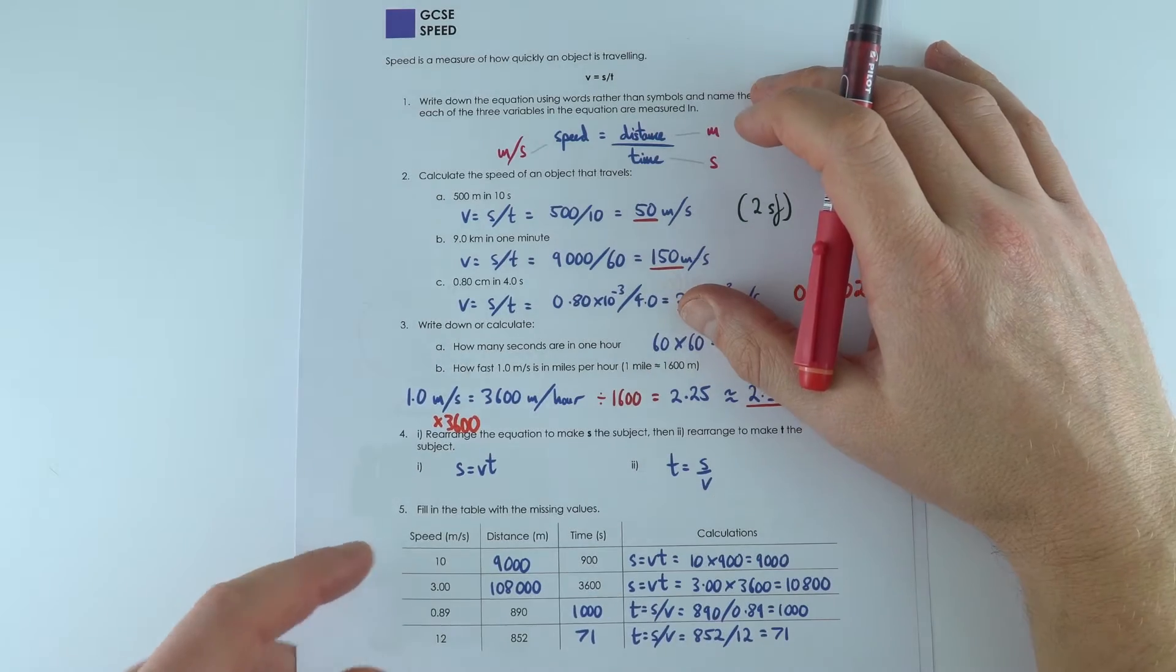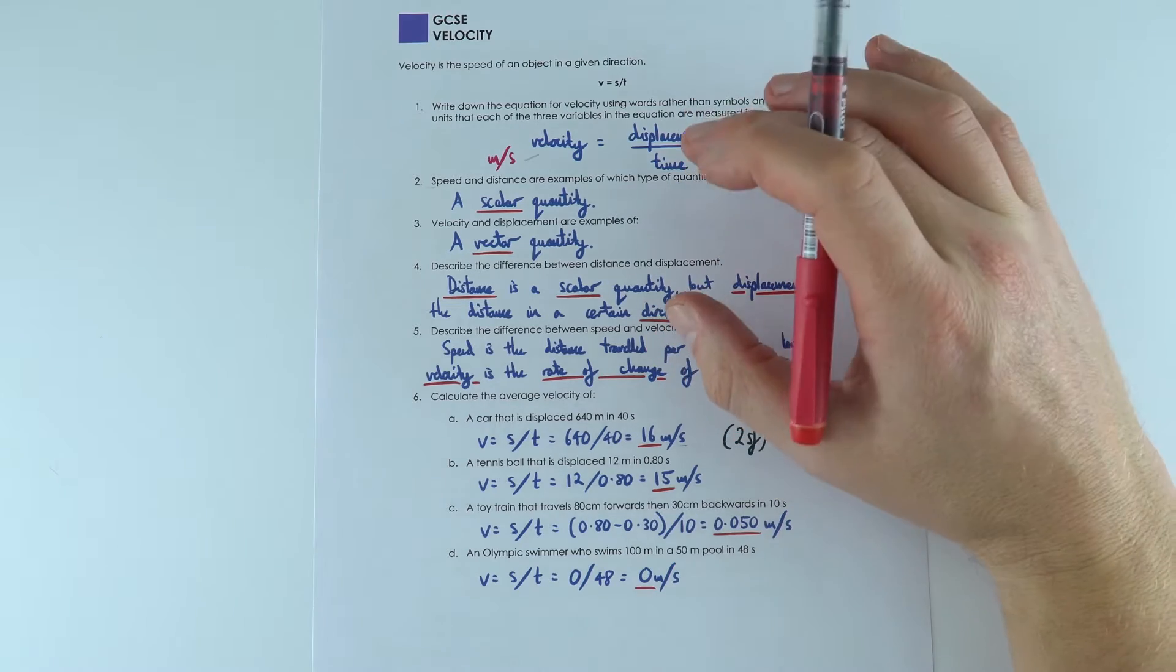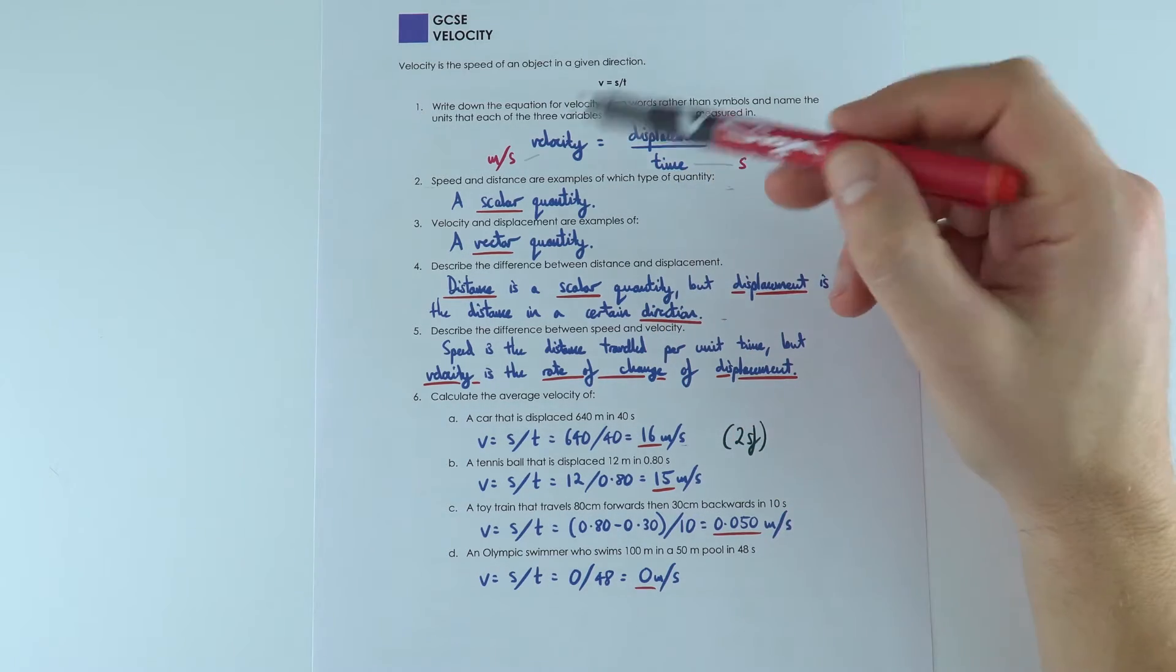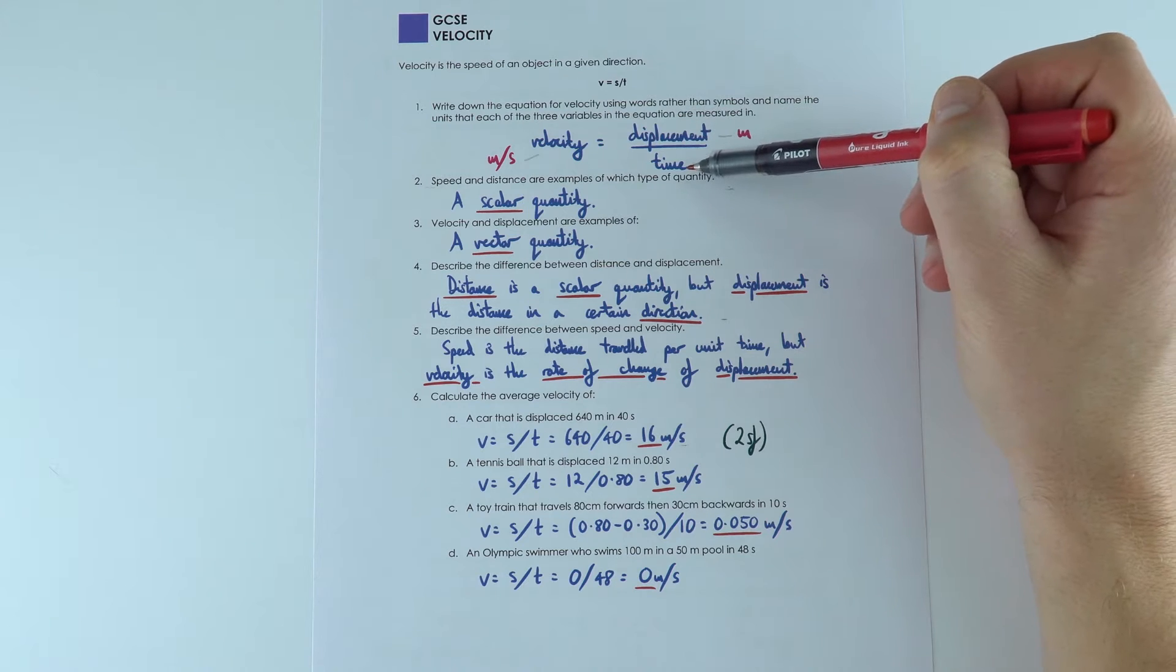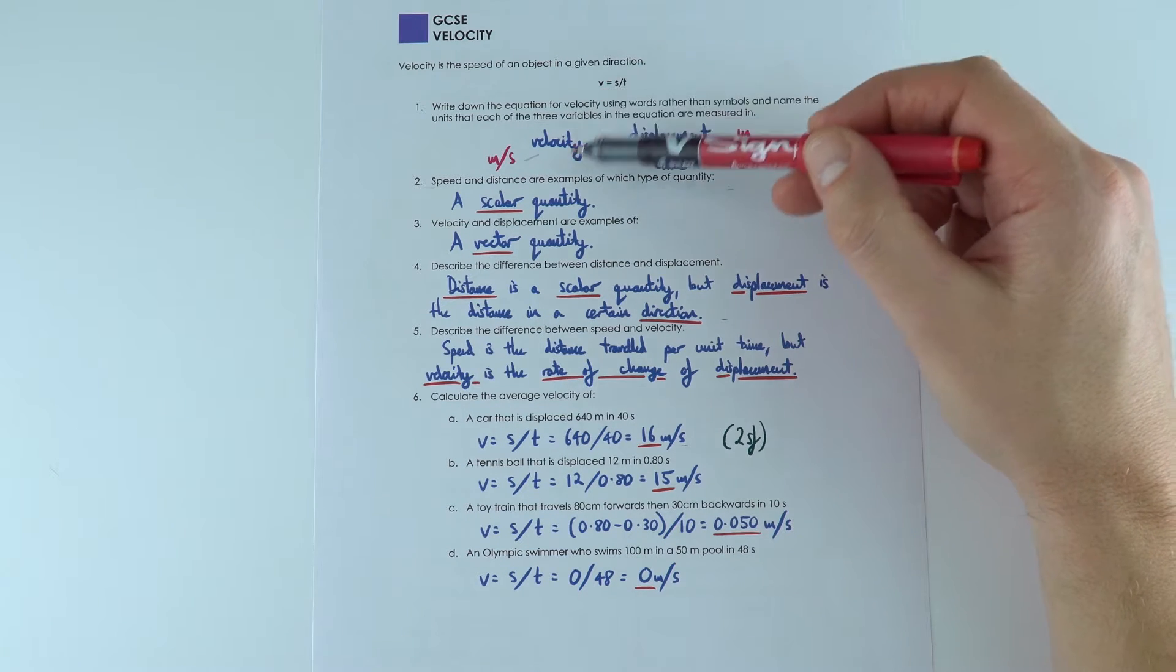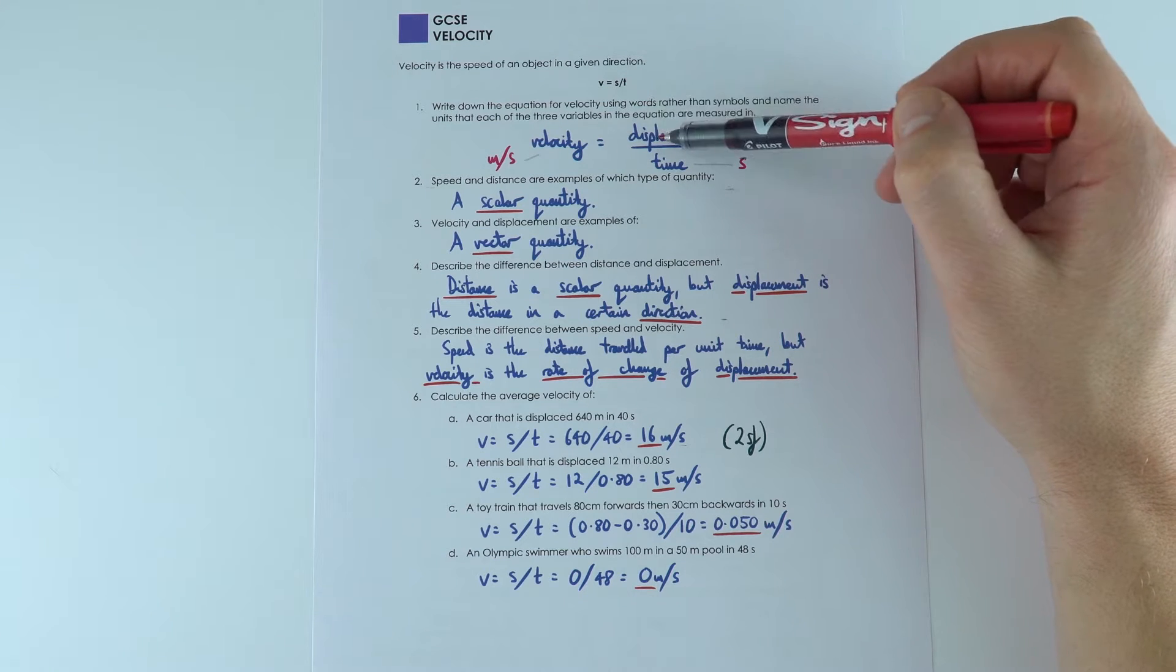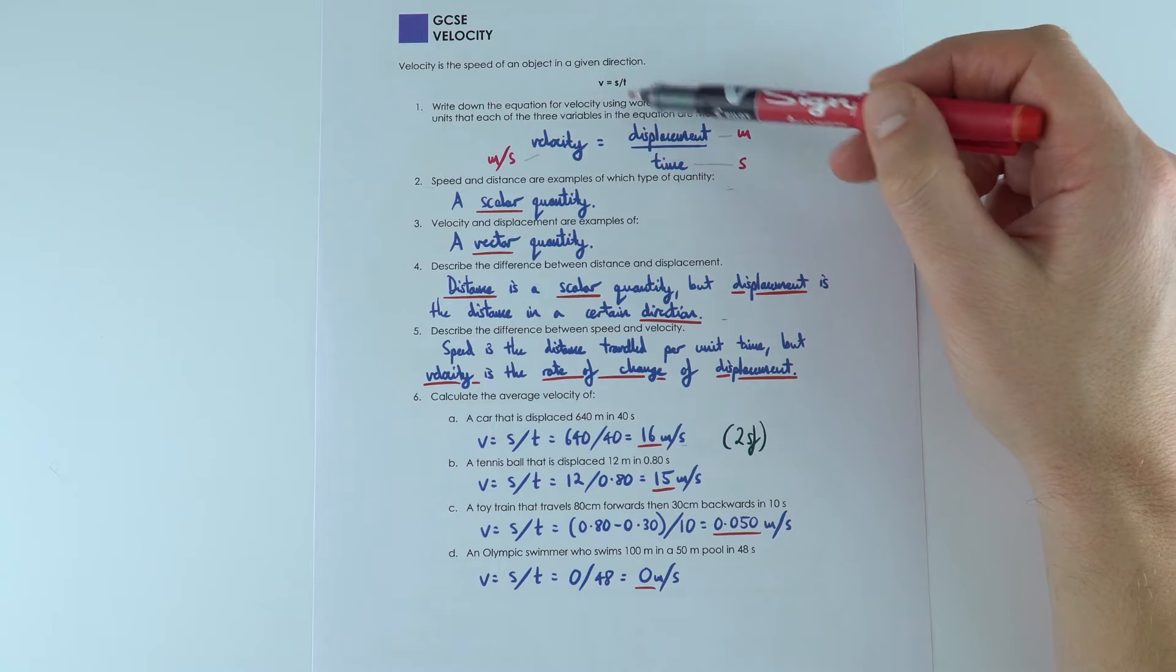Now you might have already done the worksheet on speed, and now we're going to introduce velocity, which is a vector quantity similar to speed. But here velocity is displacement divided by time. We still use the same symbol for velocity and speed, which is V, and we actually use the same letter at GCSE often for displacement and distance, which is S.